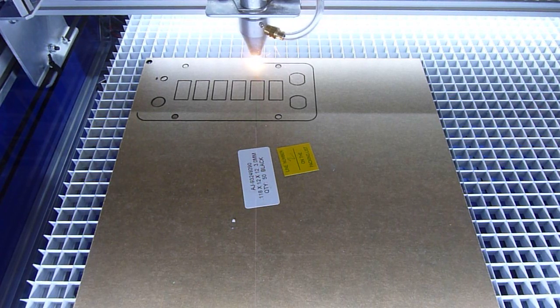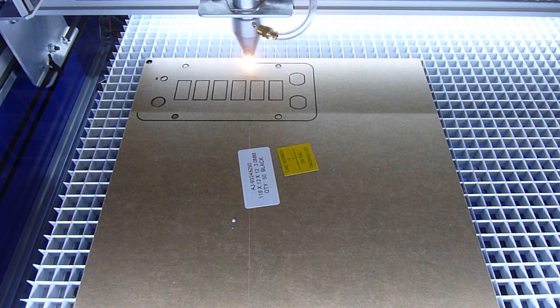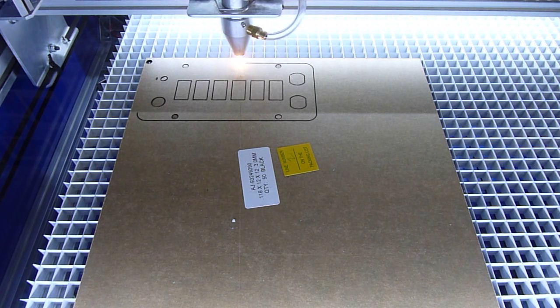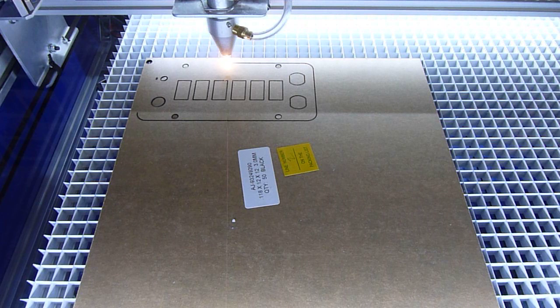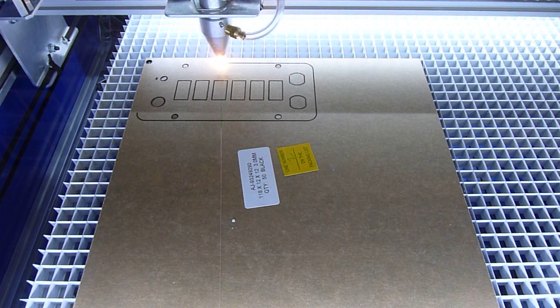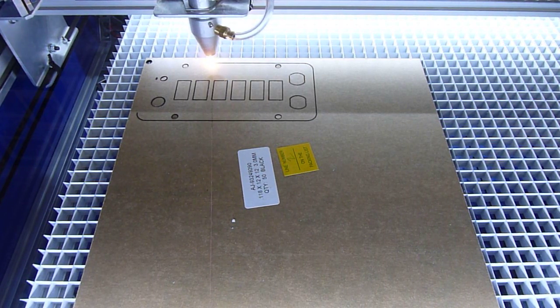I designed the front panel in Autodesk Inventor and used CamBam, a trial of CamBam, to convert it to G-code. I edited the G-code, and then I'm using Mach 3 to cut it out.